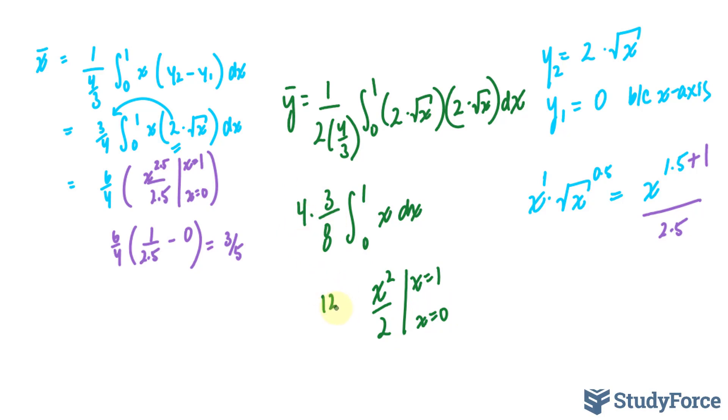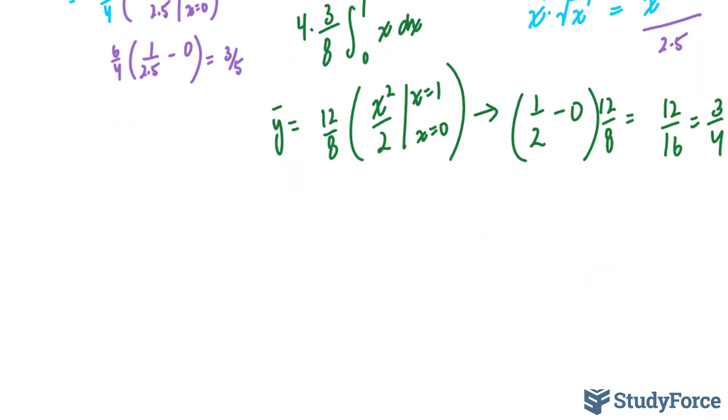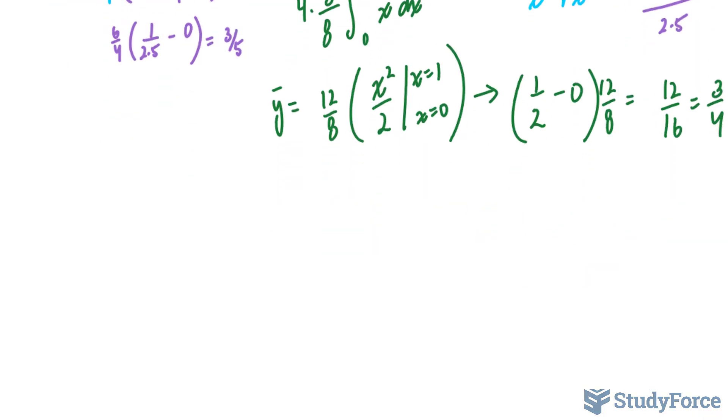These multiply to 12 over 8. x at 1 is 1 over 2. x at 0 is 0. So we have half times 12 over 8. That gives me 12 over 16, which is 3 over 4. Therefore, my centroid lies at 3 over 5 and 3 over 4.